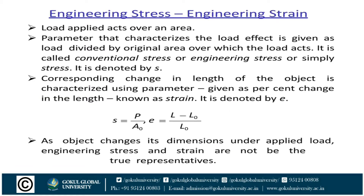First, we have to discuss what is meant by stress and strain — these are the two most important criteria to understand the strength of materials. Stress is defined as: when some external system of forces or loads acts on a body, internal forces are set up at various sections of the body which resist the external forces. The internal force per unit area at any section of the body is called stress. So sigma equals P divided by A, where P is the force or load and A is the cross-sectional area. In SI units, stress is measured in Pascals; one Pascal equals one Newton per meter squared.